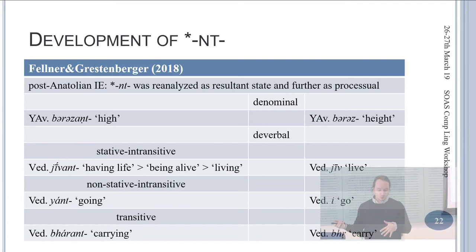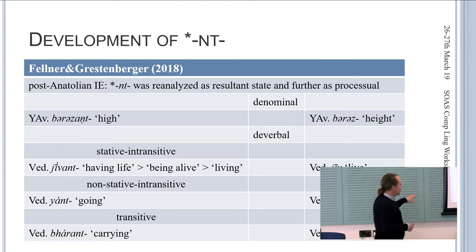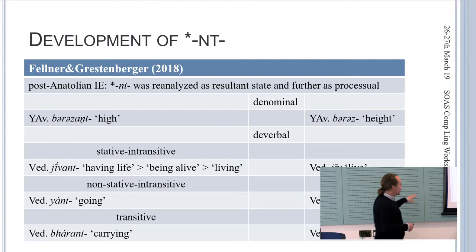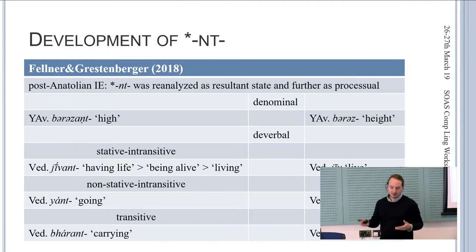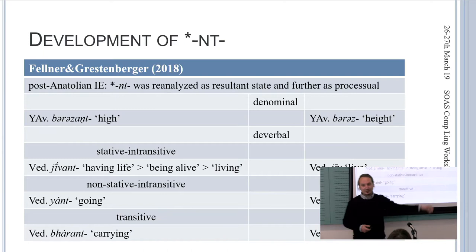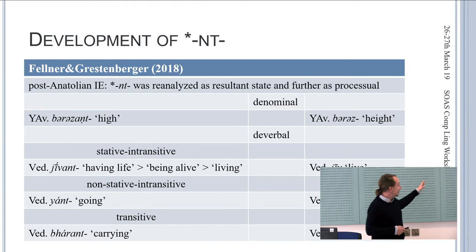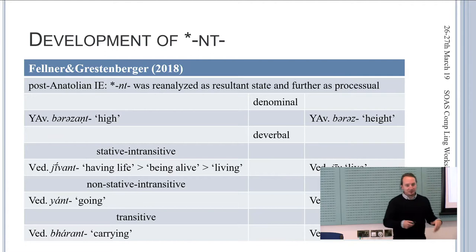What happened in the post-Anatolian Indo-European languages? We also have a reanalysis as a resultant state, but this is then further reinterpreted as processual. In Vedic, we get all the steps needed for our explanation: the form was originally nominal, meaning 'having life'; from 'having life' it got a resultant state interpretation 'being alive'; and 'being alive' of course is 'living.' With this processual interpretation, the form expanded to other verbs: to non-statives like jant 'going,' and then further to transitives like barant 'carrying.' This is what we assume for the development of the NT participle.